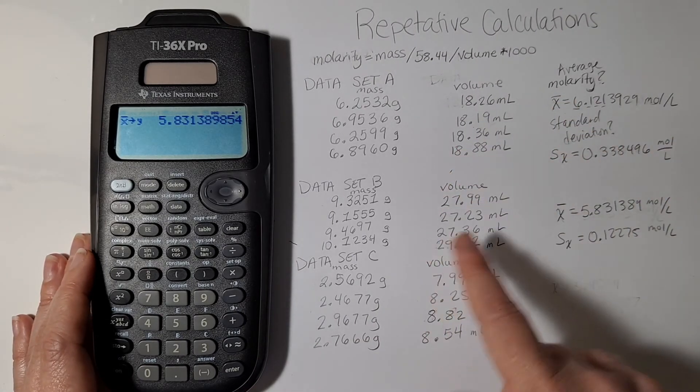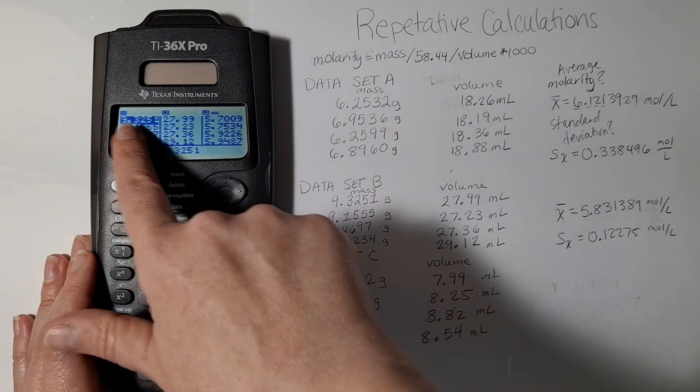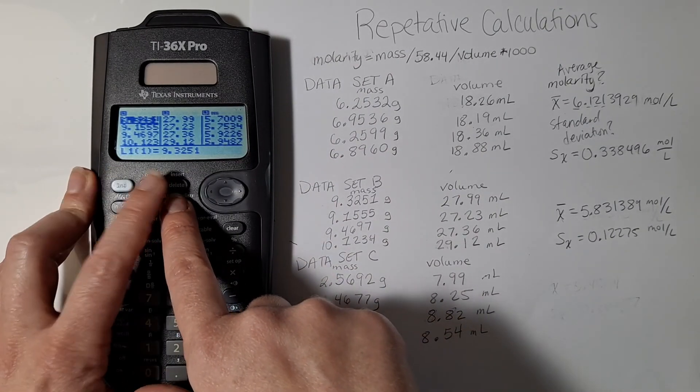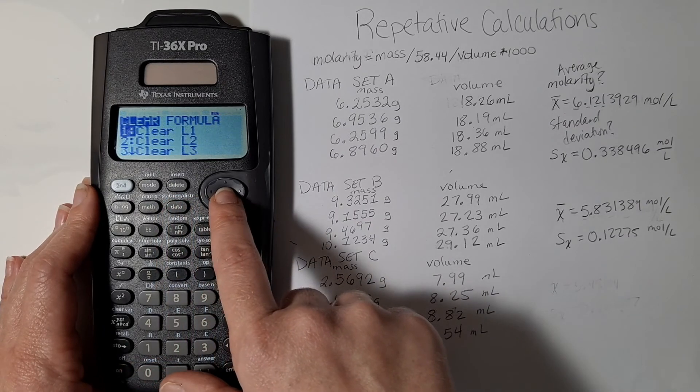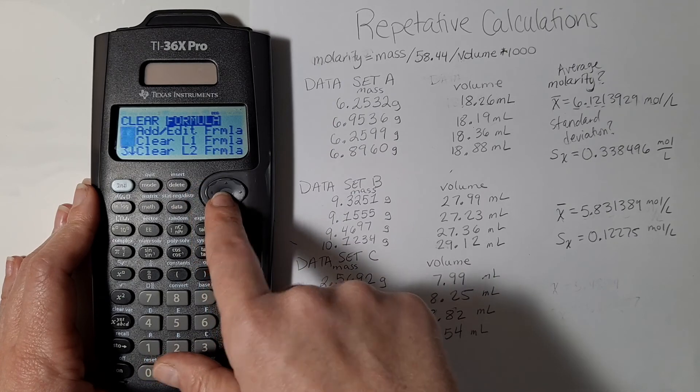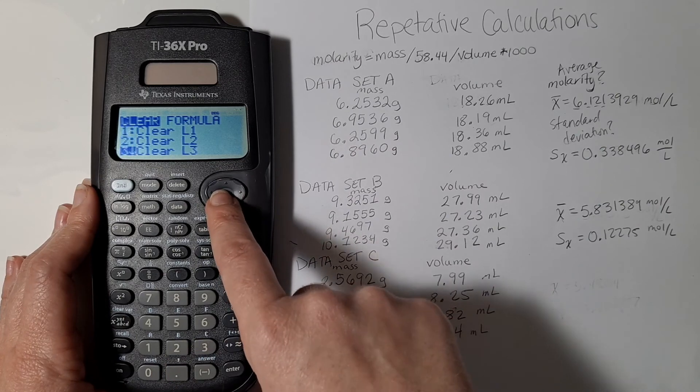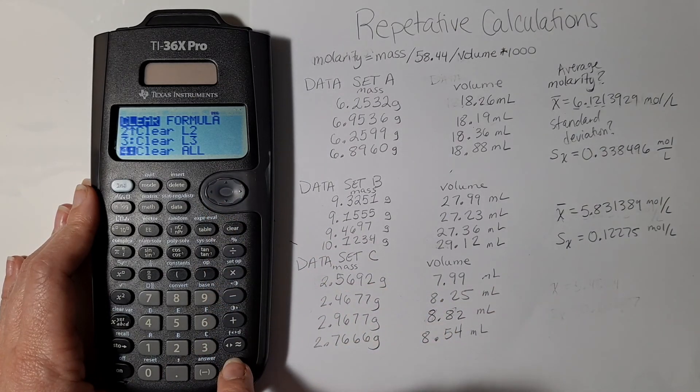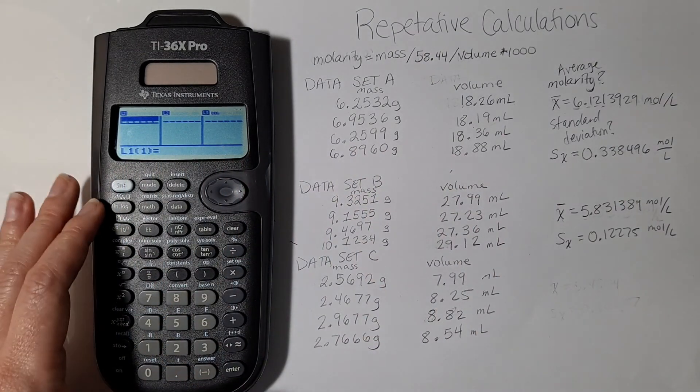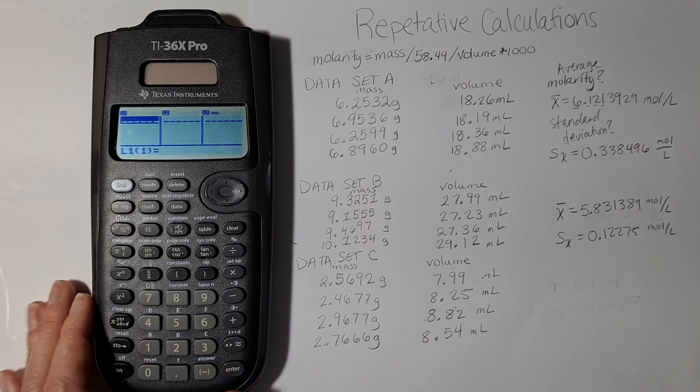But let me show you real quick how to clear your data tab. So if I go back to the data tab, of course it's filled with everything. But then I can just select the data button again and it brings back up that original menu where we can either choose to enter a formula, clear a formula, or clear data. I can clear individual lists or I can clear all of the lists, and so I'm going to clear all of them and voila, it's nice and clean. Hope that helps you get a bunch of repetitive calculations done quickly.